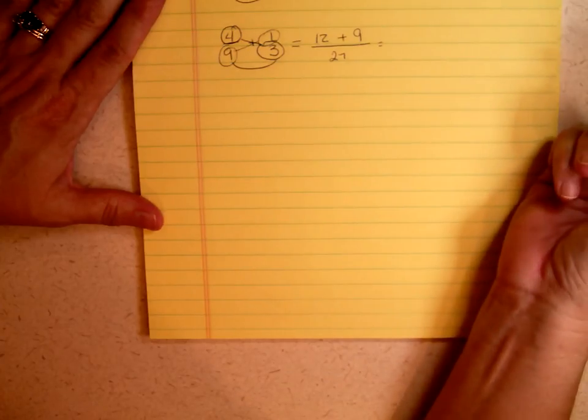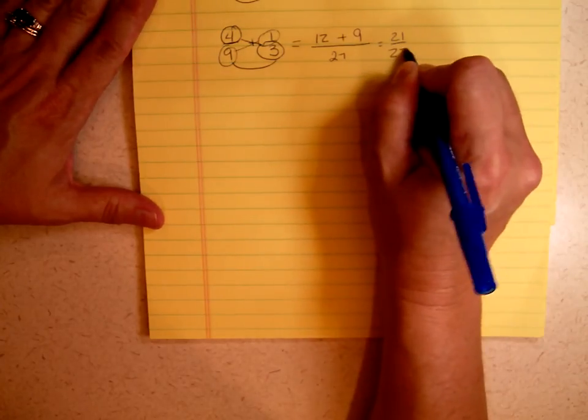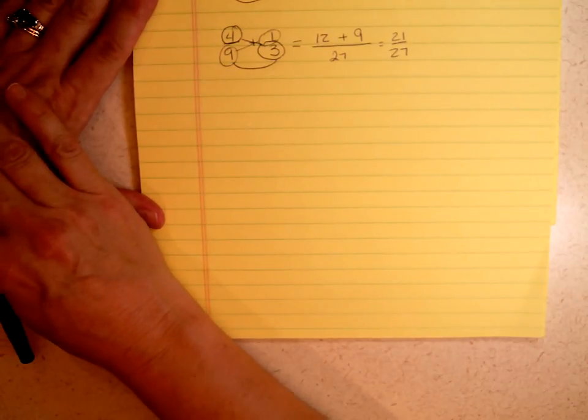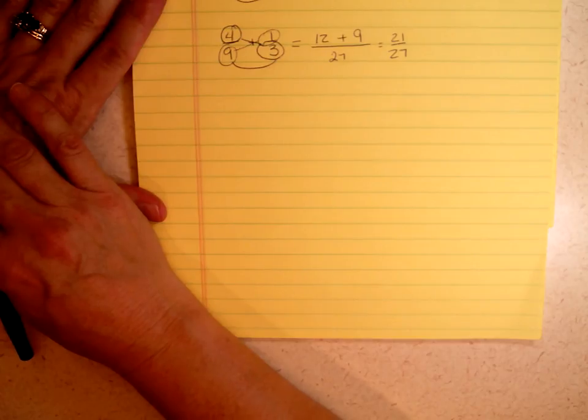So let's see, what does that give me? Looks like it gives me 21 over 27, which may look okay, but it's not in its least form.